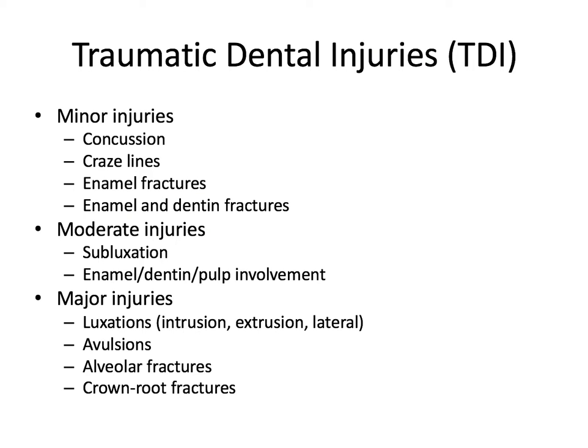Let's go over a basic outline of traumatic dental injuries. We have our minor injuries, which include concussion, craze lines, enamel fractures, and enamel and dentin fractures — these are our Ellis class 1 and class 2 fractures. Minor injuries overall involve a low cost of treatment, minor interventions, have a good prognosis, and require just a short-term follow-up.